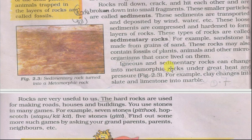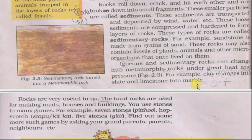Igneous and sedimentary rocks can change into metamorphic rocks under great heat and pressure. For example, clay changes into slate and limestone into marble. Aagney aur avsadi chattan uch taap aur daab ke kaaran kayantrit chattanon mein parivartit ho jaate hain — jaise chikni mitti slate mein aur chuna patthar sangmarmar mein.